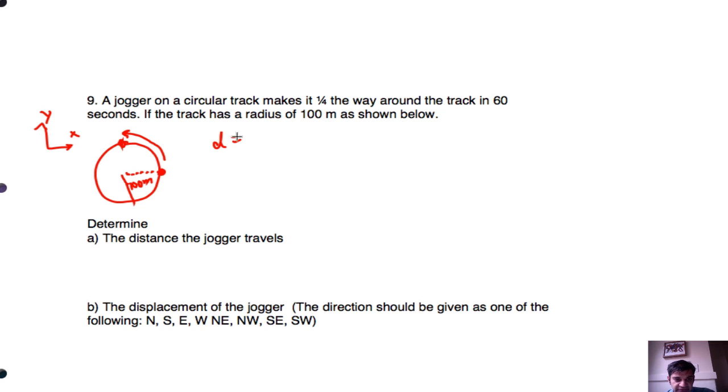So the distance is going to be a quarter of the circumference. So that's going to be 1/4 times 2 times pi times r, which is going to be 1/2 times pi times 100, which is 50 pi. And when we actually calculate that, we'll get 157 meters, roughly. Excellent.